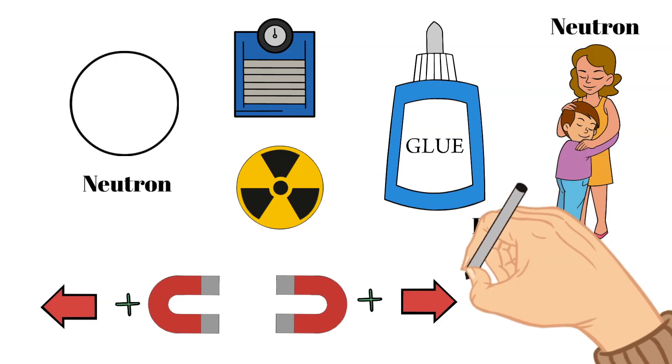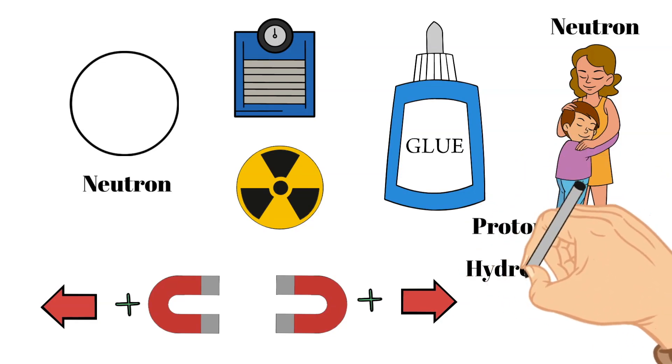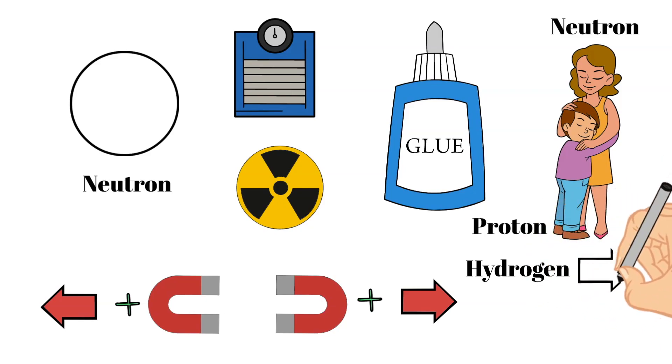An interesting fact is that the only atom that does not have any neutrons is hydrogen. Because it only has one proton, so it's not repelling any other protons in the nucleus, so it doesn't have this problem and can get by without these neutrons.